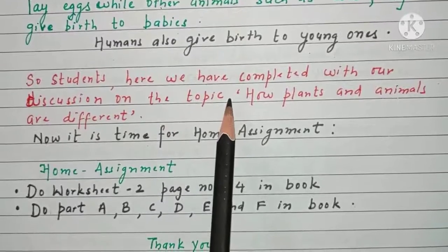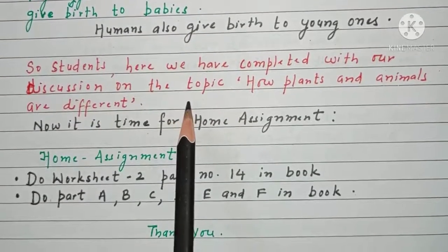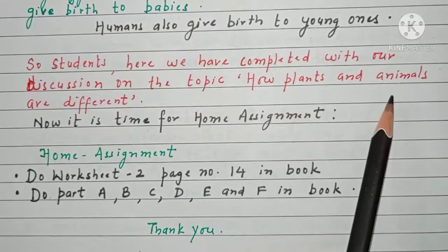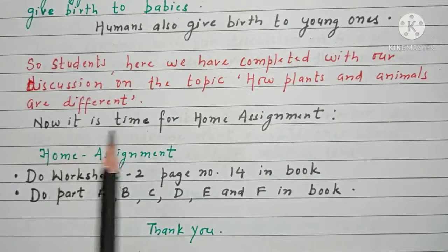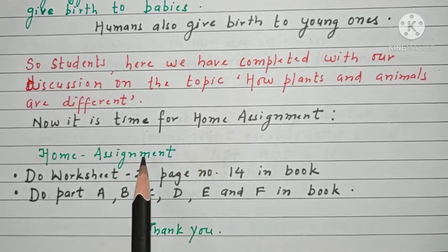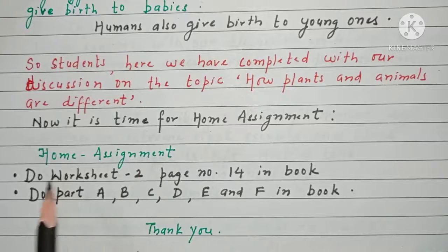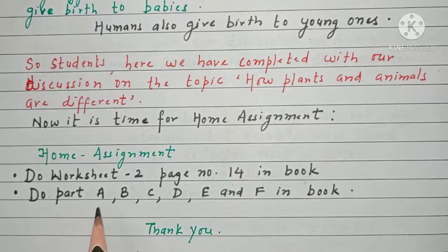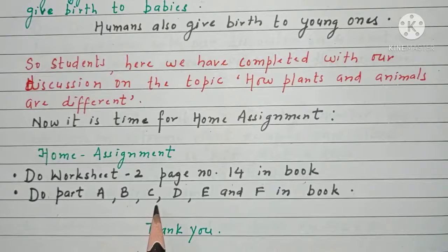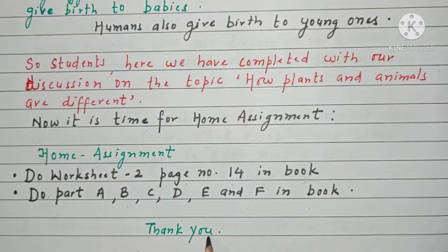Here we have completed our discussion on the topic: how plants and animals are different. Now it is time for the home assignment. Your home assignment questions are: first, do worksheet 2, page number 14 in your book, and then do parts A, B, C, D, E and F in your book. Thank you, students.